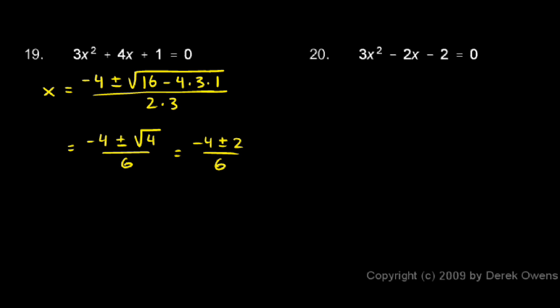So this is negative 4 plus or minus 2 divided by 6. We can work each of those answers out: negative 4 plus 2 over 6, and negative 4 minus 2 over 6. Negative 4 plus 2 is negative 2, and negative 2 over 6 is negative 1 third. Then with the minus sign, negative 4 minus 2 is negative 6, divided by 6 is negative 1. So two answers, both real and rational numbers: negative 1 third and negative 1.